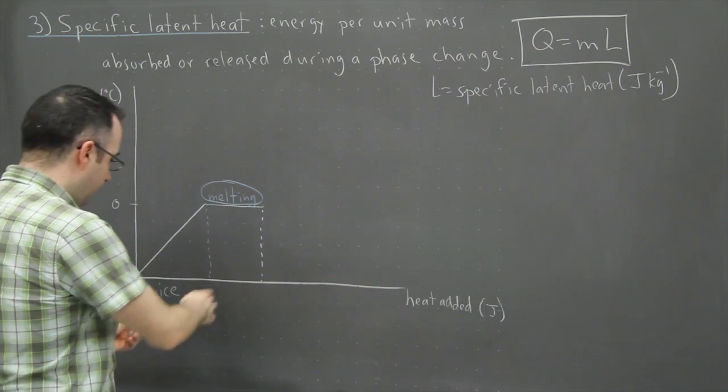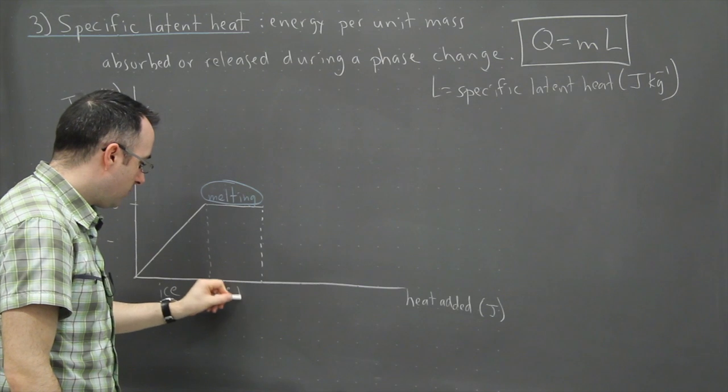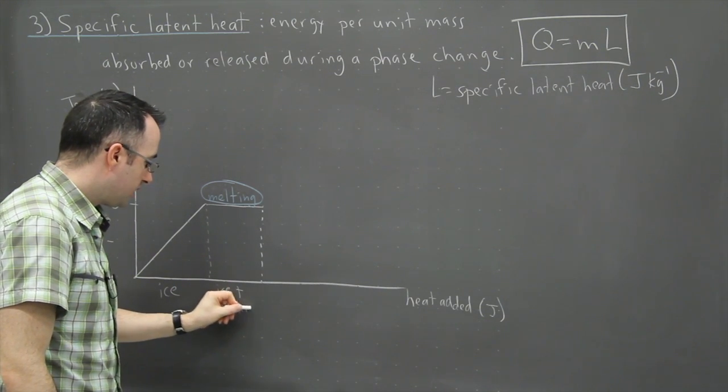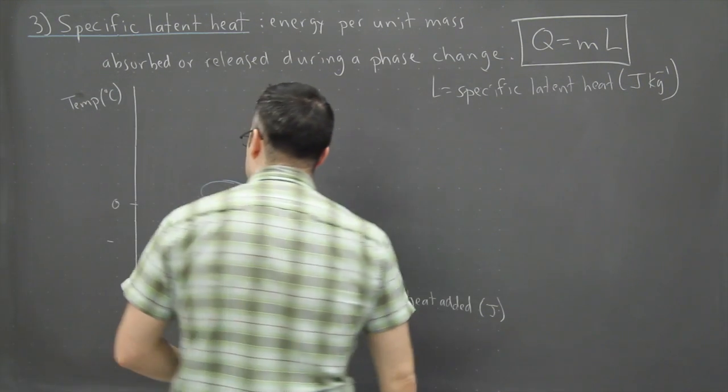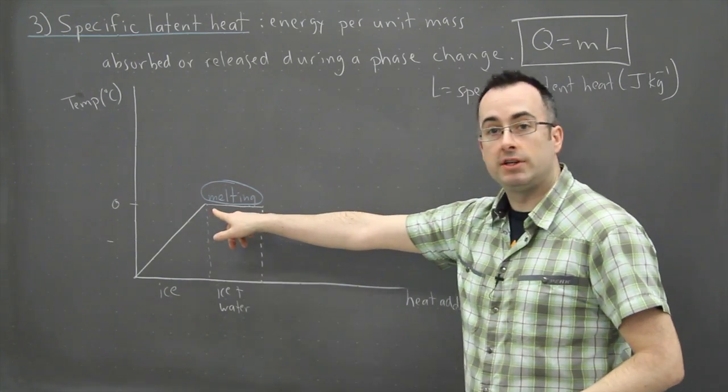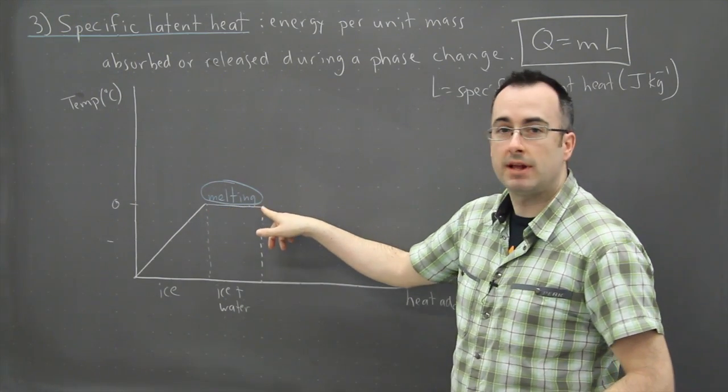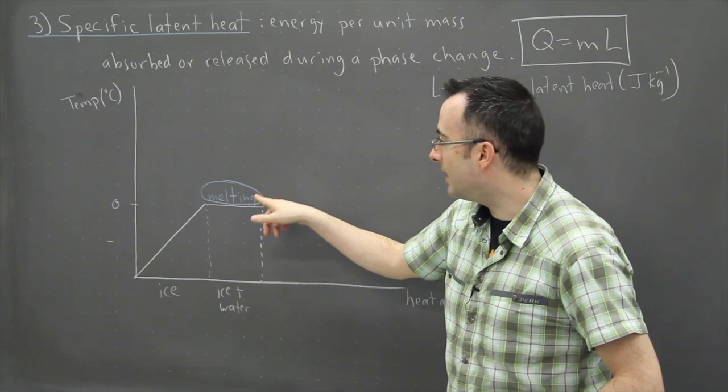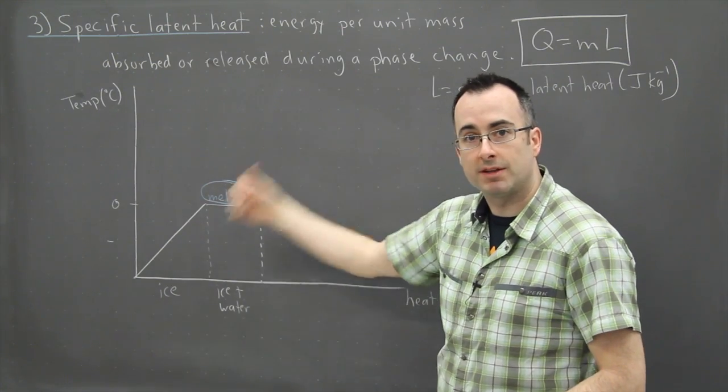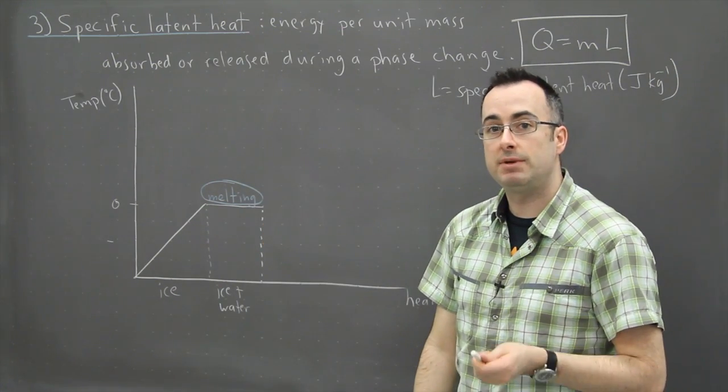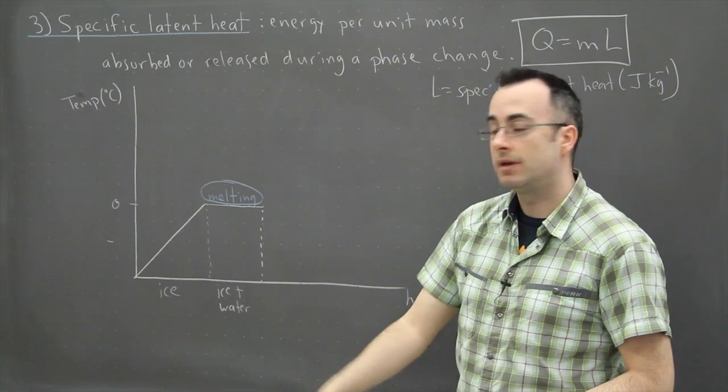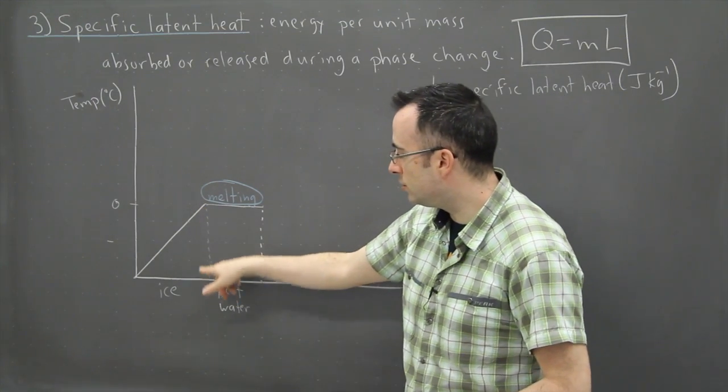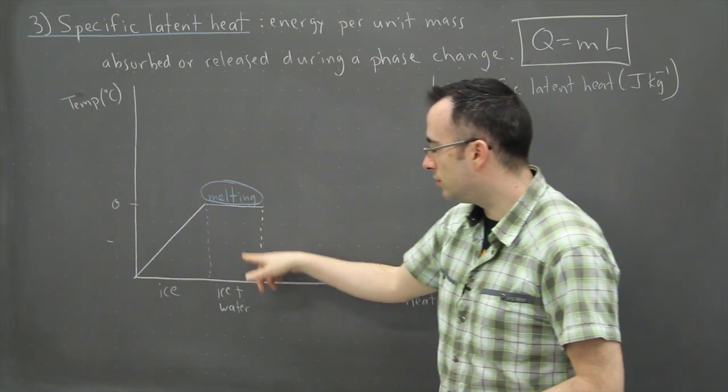Now what do we have here? Well we have ice but we also have water because what's happening here is we're still adding energy. So from here to here we're still adding energy. So then why isn't the temperature going up as we add energy? That's because that energy is being used to break the bonds, in other words it's being used to convert things from ice to water.